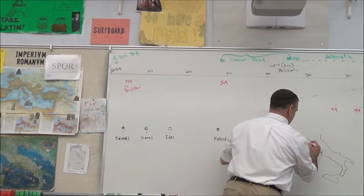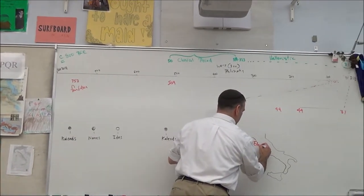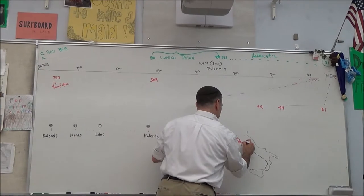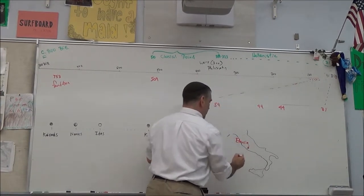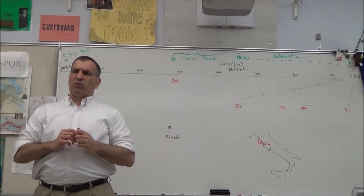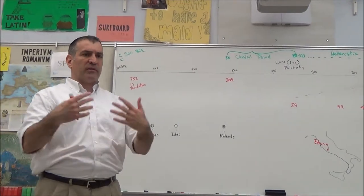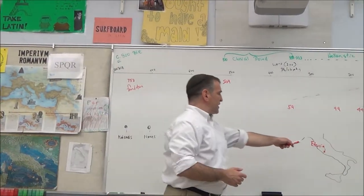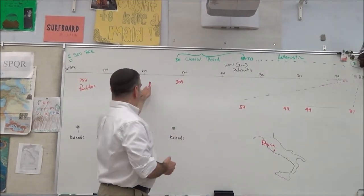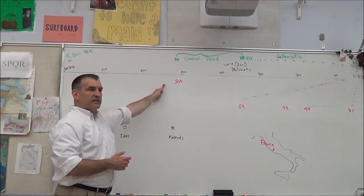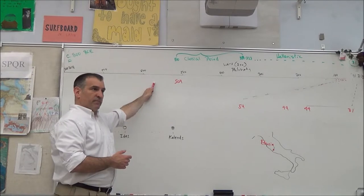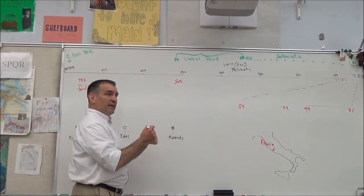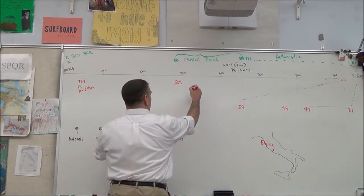Etruria is the region just to the north of Rome, and they were more advanced, more powerful than the Latins to their south. And Rome becomes under their domination, and in this period, the kings of Rome were Etruscan. They kick them out in 509, they kick out the Etruscan kings, and Rome becomes a republic.